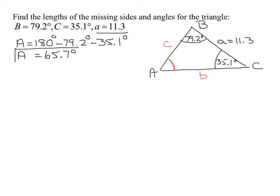I've already found angle A. Now I need to find side B and side C. If I have a choice of using the law of sines or the law of cosines, the law of sines is always easier, so I check if I can use that first. The law of sines says A over sine A equals B over sine B equals C over sine C.